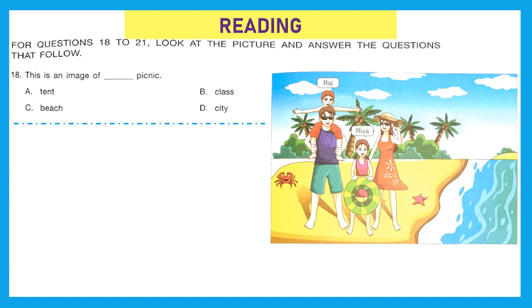Moving to the next section, the reading section. For questions 18 to 21, look at the picture and answer the questions that follow. Please observe it. Question 18, this is an image of dash picnic. In the given picture, we can see sea, crab, starfish, coconut trees. This tells us that this is an image of beach picnic. Option C is the right answer.